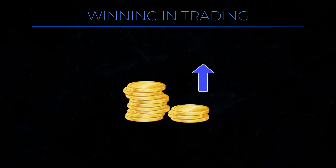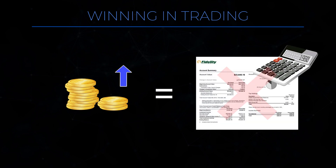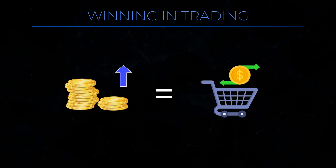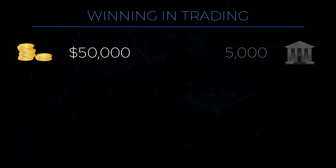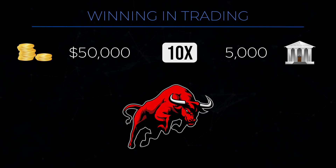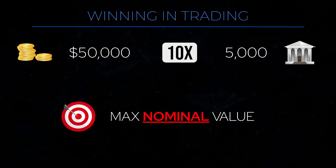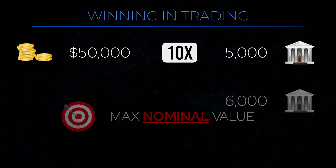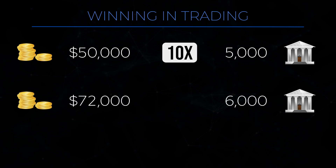If you ask 100 traders what increasing wealth is about, most of them will define it as equity number goes up on their broker statement — and that's missing the point entirely. Increasing wealth is not measured in nominal terms, but rather in real terms, what most will call purchasing power. Take the example of a $50,000 starting capital and a $5,000 S&P 500 — at that point you can buy 10x the index. In a bull market, your goal should be to make your portfolio rise at least as fast as the index. So a $6,000 S&P 500 and a $72,000 ending capital would raise your purchasing power from 10x to 12x.